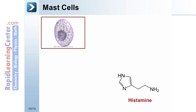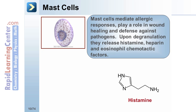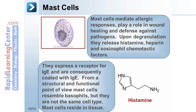Mast cells mediate allergic responses and play a role in wound healing and defense against pathogens. Upon degranulation, they release histamine, heparin, and eosinophil chemotactic factors. They express a receptor for IgE and are consequently coated with IgE. From a structural and functional point of view, mast cells resemble basophils, but they are not the same cell type. Mast cells reside within tissue.